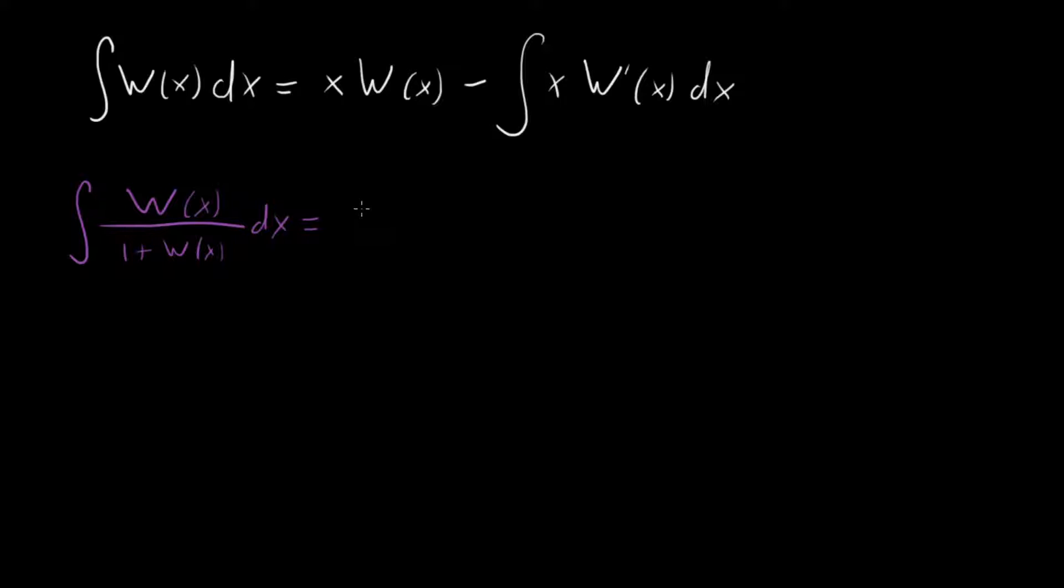And that change of variables is going to be, and the way that people write it is as little w equal to big W of x. And as a result, x is equal to w e^w. And dx, we can get it from here, dx is equal to dw times (e^w + w e^w).